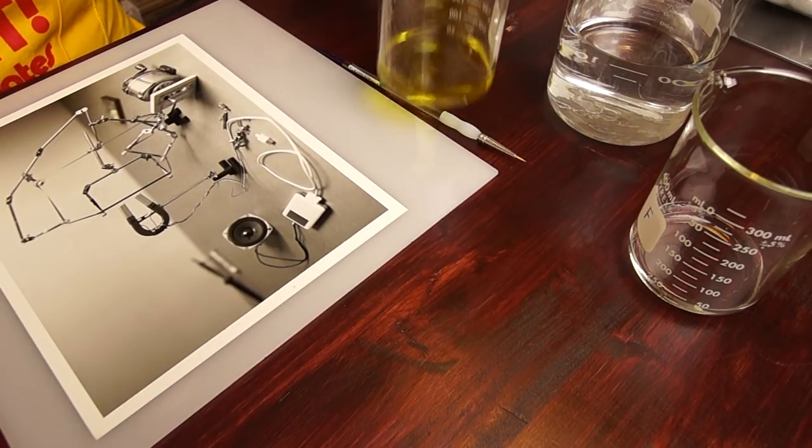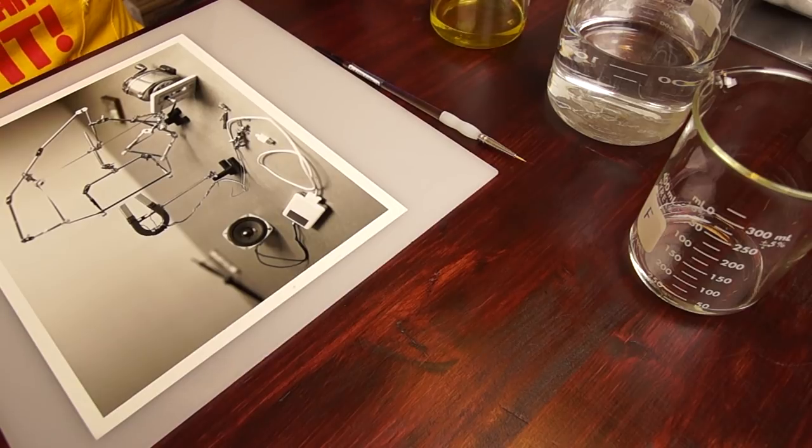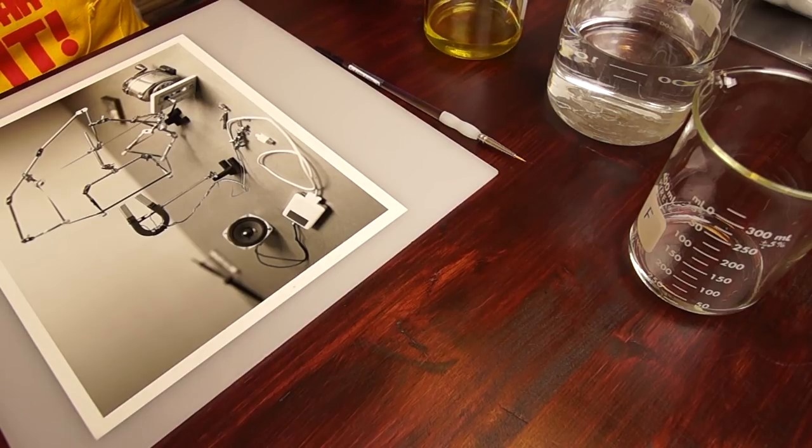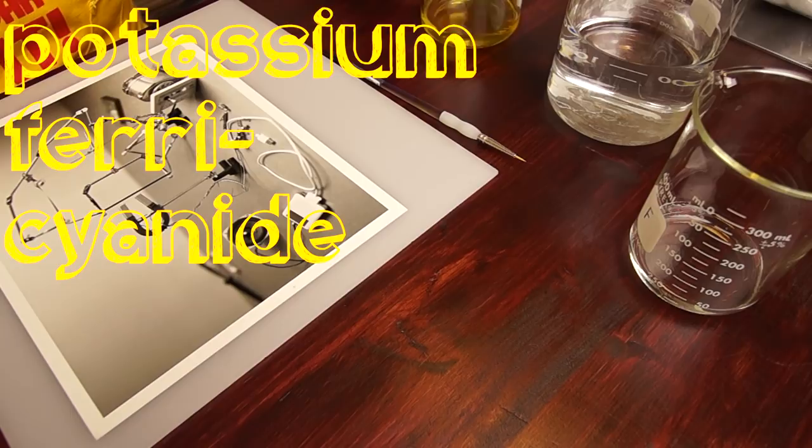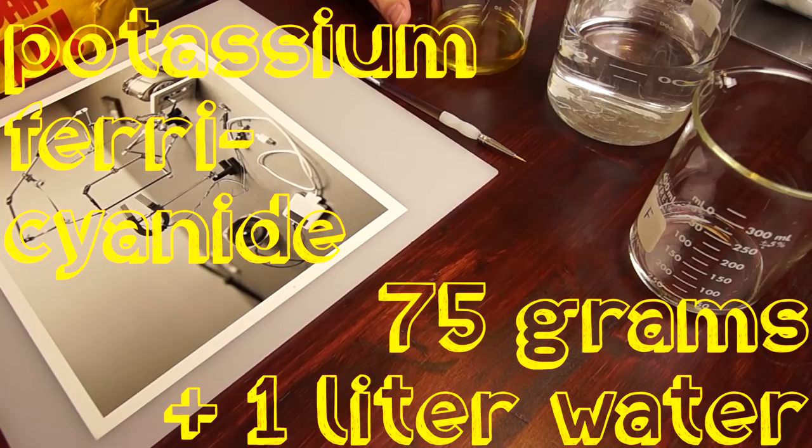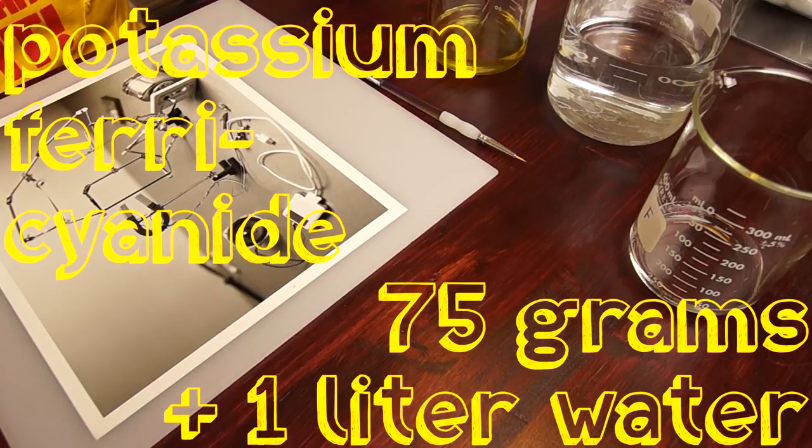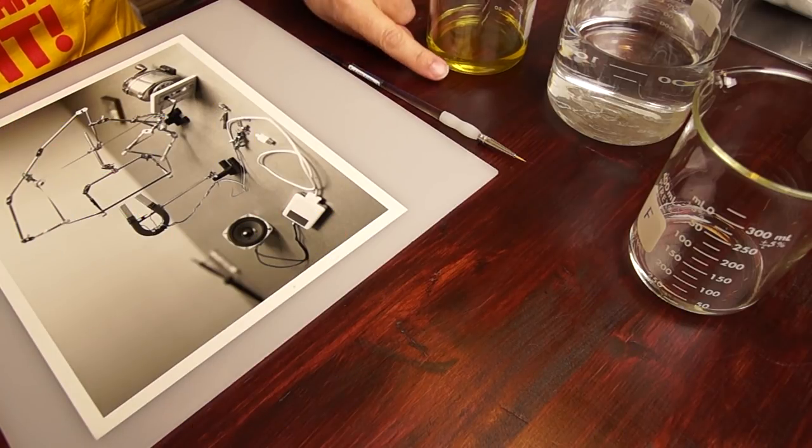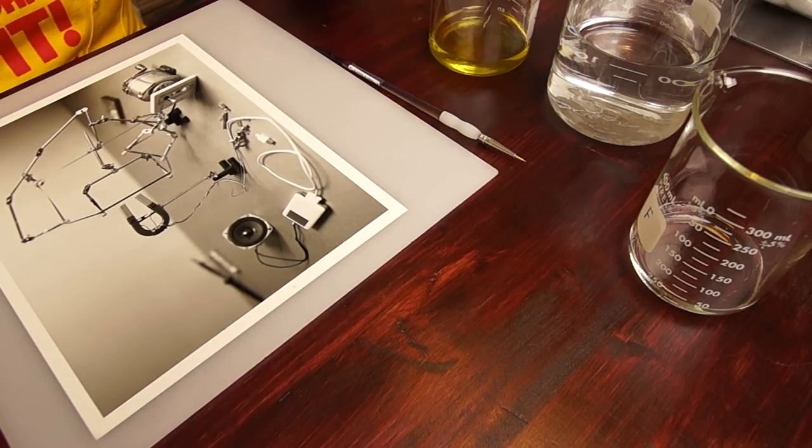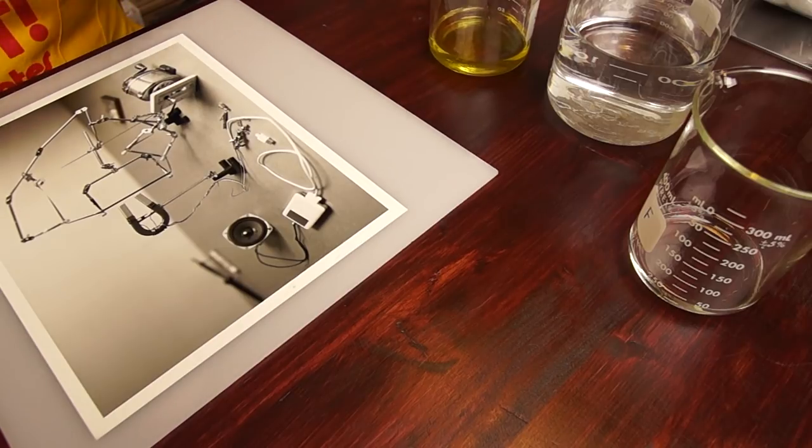So I have here farmer's reducer, the bleach part. This is potassium ferricyanide. It is mixed 75 grams of the powder or crystals mixed to one liter of water. Then I just took a little bit of the stock solution and mixed that one-to-one with water. So, half as powerful as a stock solution. You don't want it too strong or it'll be uncontrollable, too weak, and it'll just take way too long.